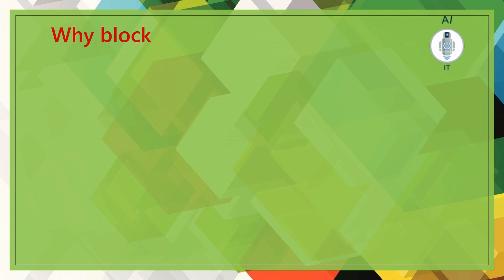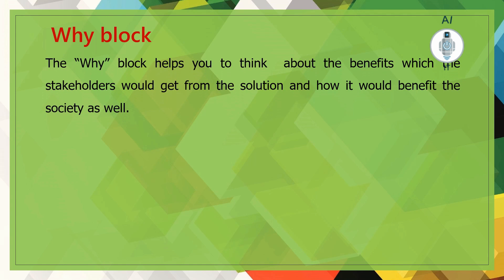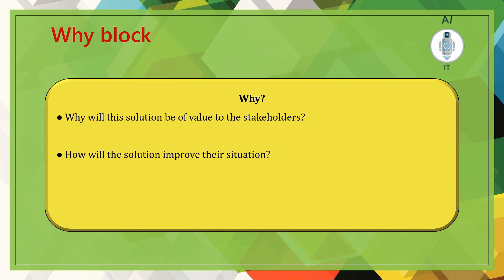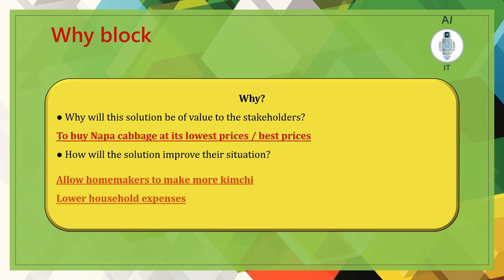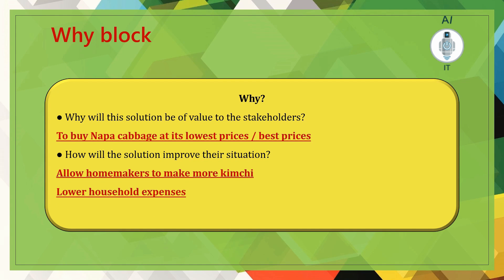The fourth block is the 'why' block. The why block helps us think about the benefits that stakeholders would get from the solution and how it would benefit society as well. Why will this solution be of value to stakeholders? Because they can buy napa cabbage at its lowest or best prices. This will allow homemakers to make more kimchi and lower their household expenses.